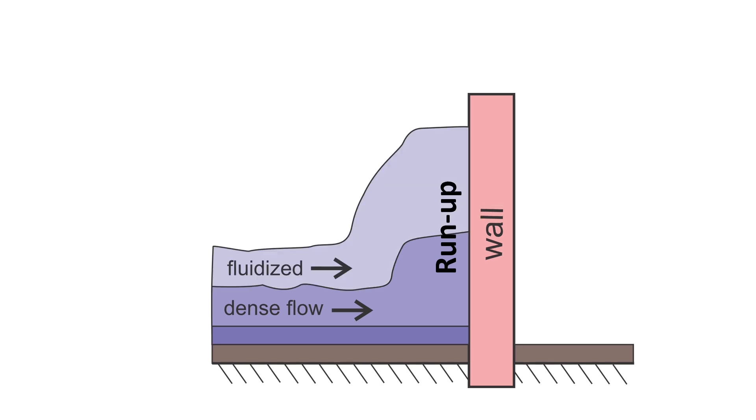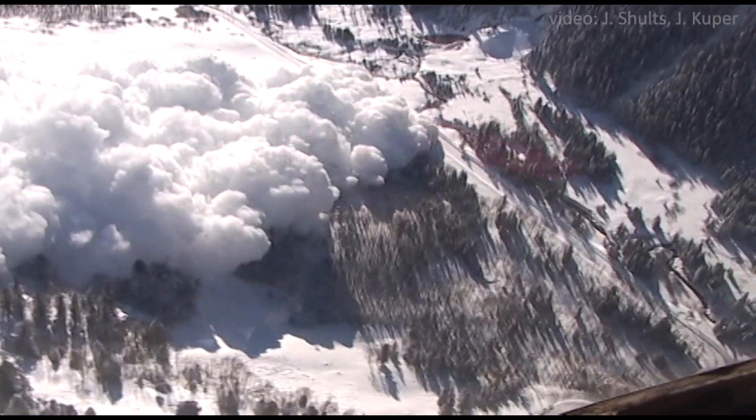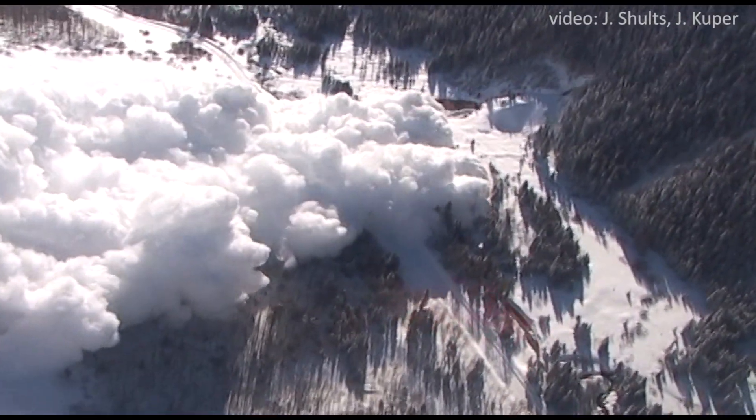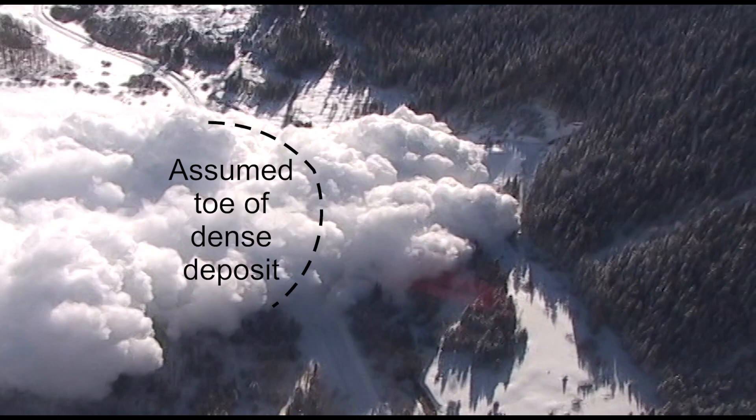While a wall can be designed to stop the run-up from the dense flow and fluidized layers, the powder layer is too tall to be stopped. The powder layer of a large dry avalanche typically flows past the deposit from the dense flow. Let's assume the toe of the dense deposit from the avalanche is around here.